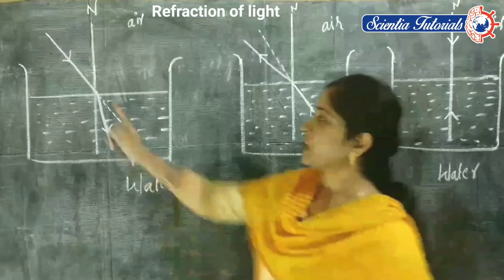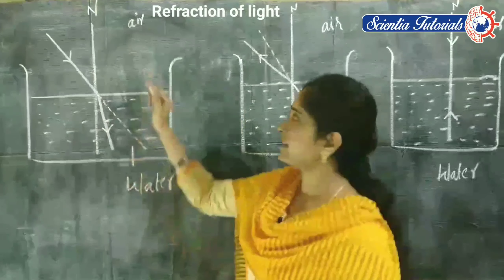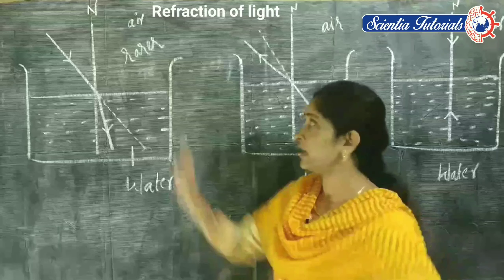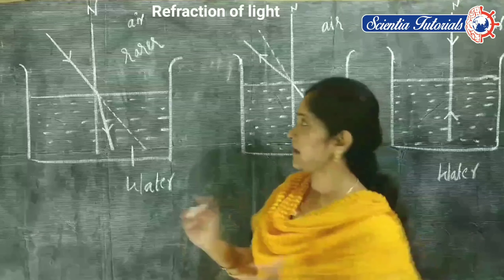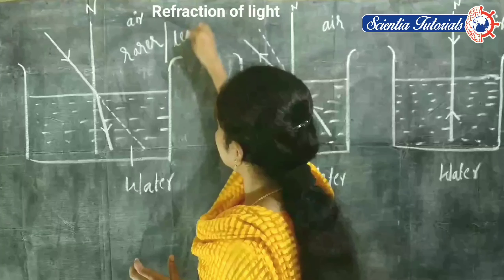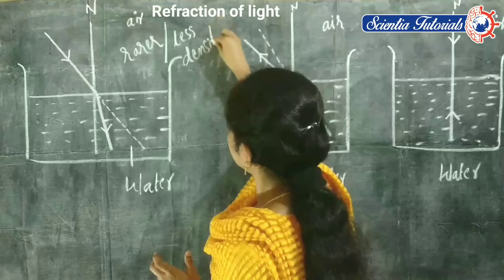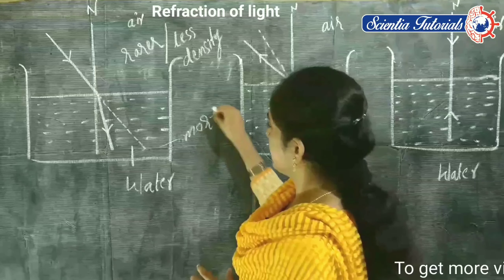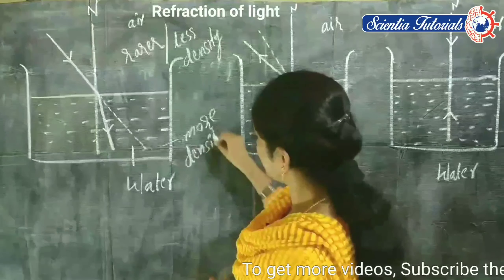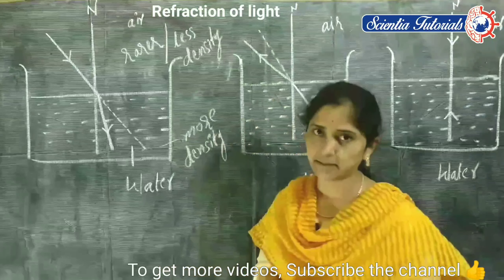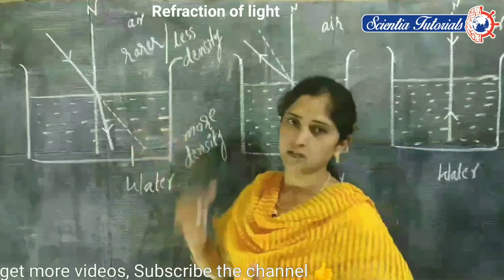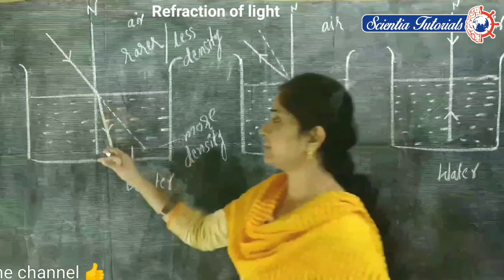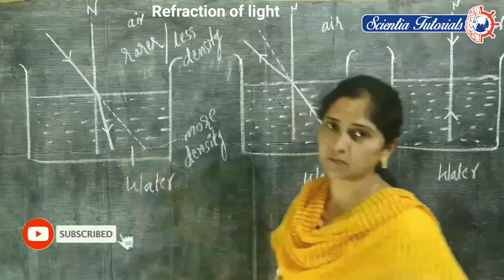Here the light is traveling from air to water. Air is considered the rarer medium — air has less density, so it is a less-density medium. Water is a more-density medium. As the medium changes, and due to the changing speed of light, light gets bending and deviates from its path.